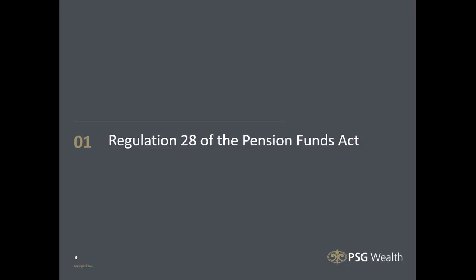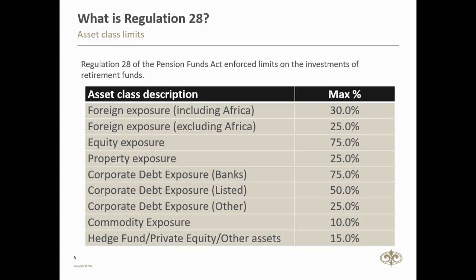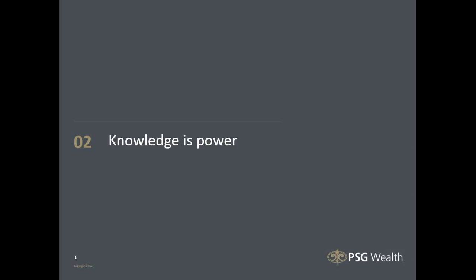What is Regulation 28 of the Pension Funds Act? Regulation 28 is the law which enforces limits on the investments of retirement funds. The intention of this act is to have more control and protect funds against making imprudent investments. The table displayed here reflects the limits which apply to each asset class. For example, the maximum amount of equity exposure you can have within your retirement annuity is 75%, and so on for each asset allocation. With the wise words of Benjamin Franklin in mind, I encourage you all to use the tools available to make an educated and informed decision for your future.